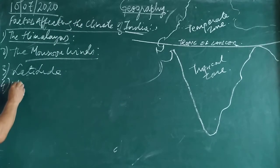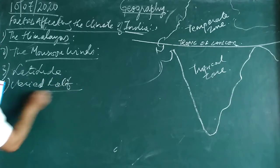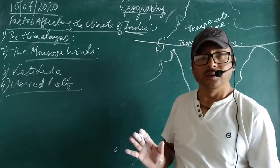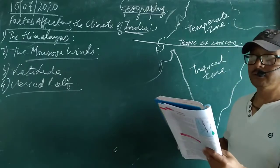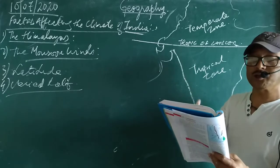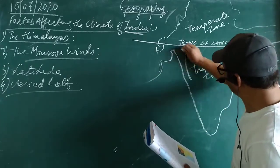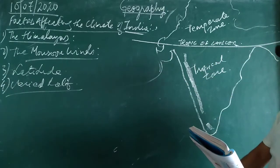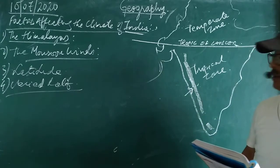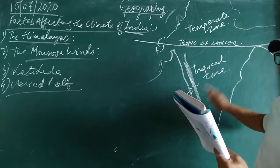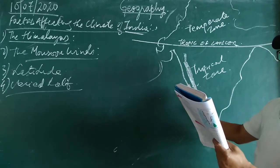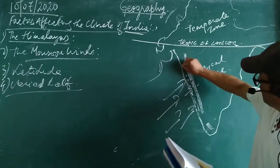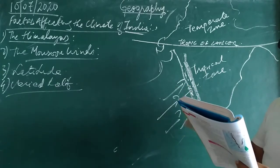Fourth point: varied relief. India has different types of relief features and relief plays a very important role in climatic conditions. The Western Ghats get heavy rainfall on the western side because they stand in the way of the Southwest Monsoon winds coming from the Arabian Sea. The western side of the Western Ghats faces the Southwest Monsoon — the maximum amount of moisture is shed here. On the other hand, the Deccan Plateau gets less rainfall because it lies in the rain shadow area.